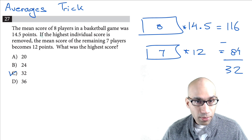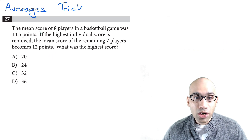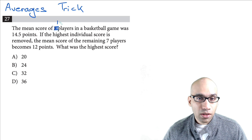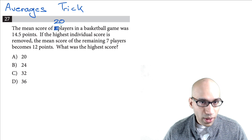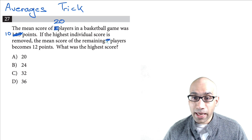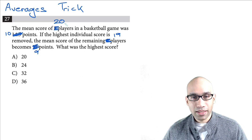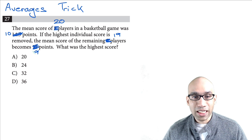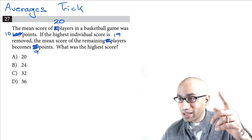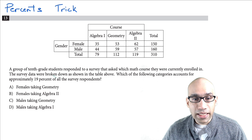Now try the same strategy with a changed problem: 20 players with an average of 10 points, and then one player is removed, leaving 19 players with an average of 9 points. Find the highest score. Post your answer in the comments — it's important for you to learn this trick.